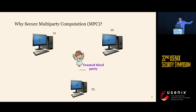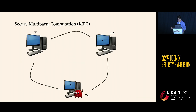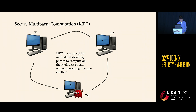If we had a trusted third party, they would just send all their inputs to that trusted third party, who would compute the function and send them the result. But there aren't so many trusted third parties out there in the real world. So what we have instead is MPC — a class of protocols which allow mutually distrusting parties to compute functions on their joint data without revealing it to one another, even in the presence of some malicious parties.